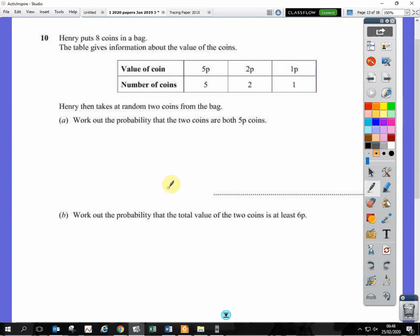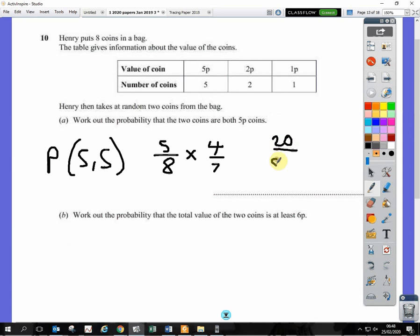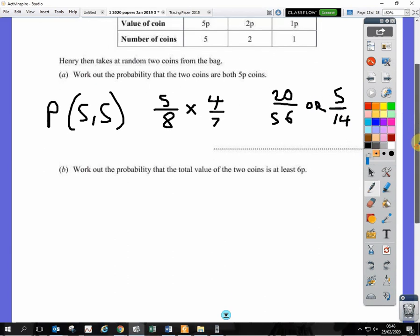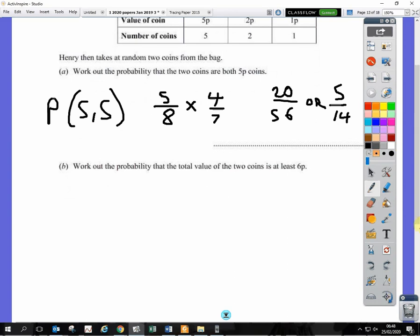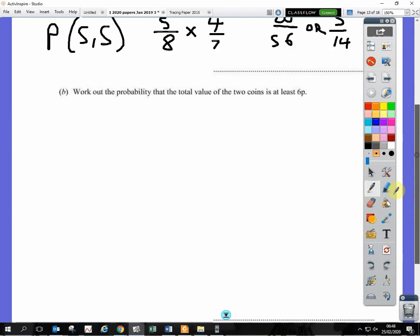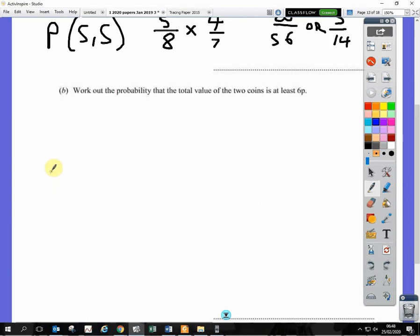The next question. Henry takes at random two coins from the bag. The probability that they're both 5. We don't need to draw a tree diagram for this bit, but it's 5 followed by 5. So how many 5Ps are there? There's 5 out of 8 there. And next time, there will only be 4 out of 7. So if you multiply across, we end up with 20 over 56. This cancels down. If you want to cancel it down, divide them both by 5. You get 5 over 14.